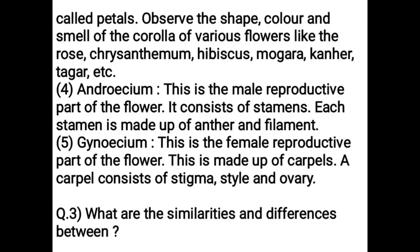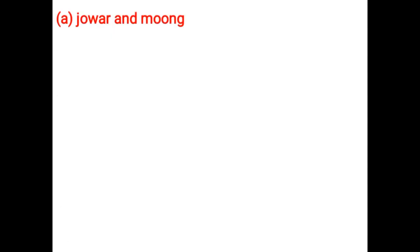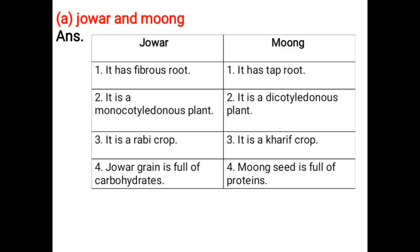Similarities and differences between Jowar and Moong: Jowar has fibrous roots while Moong has a tap root. Jowar is a monocotyledonous plant; Moong is a dicotyledonous plant. Jowar is a rabi crop; Moong is a kharif crop. Jowar grain is full of carbohydrates, while Moong seed is full of proteins.